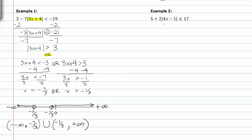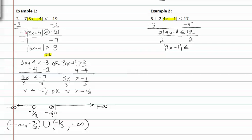In example two, we must again remember to subtract 5 from both sides because we have to isolate the absolute value before we can break it into two pieces. Notice the 2 is being multiplied to the absolute value, so we divide both sides by 2 and get the absolute value of 4x minus 1 is less than or equal to 6.